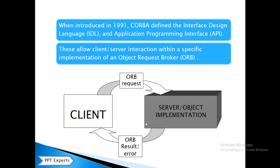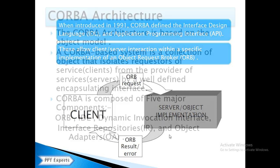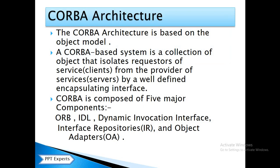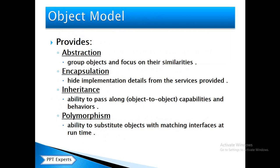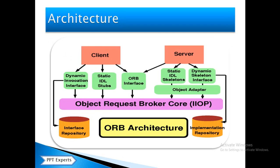These allow clients and servers to communicate with each other using an object, in a one-to-one communication. CORBA architecture consists of clients and server. It is based on an object model. The object model consists of abstraction, encapsulation, inheritance, and polymorphism. The client sends a request to the server and then receives a response from the server to the client using an object.